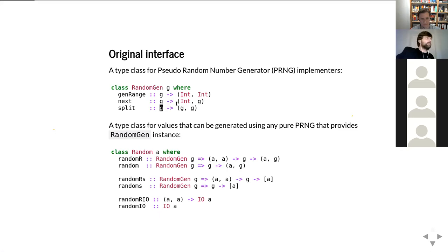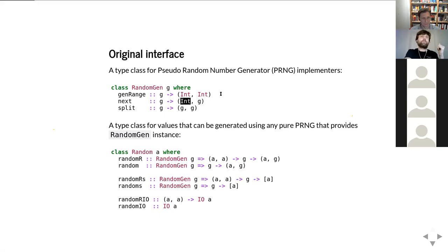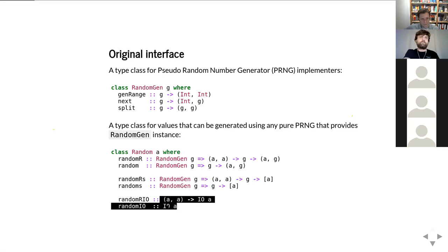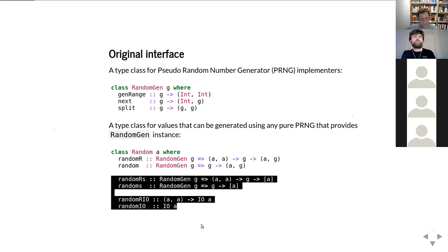The 'next' function, given a generator, produces a random Int value and a new generator, where that integer will be in the range determined by the 'genRange' function. That's the gist of what it means to be a pure random number generator. There is also a 'Random' class, with two important functions: 'random', which given a generator produces a random value and a new generator; and 'randomR', which takes minimum and maximum bounds (inclusive) and produces a random value in that range and a new generator. These four functions have default implementations.